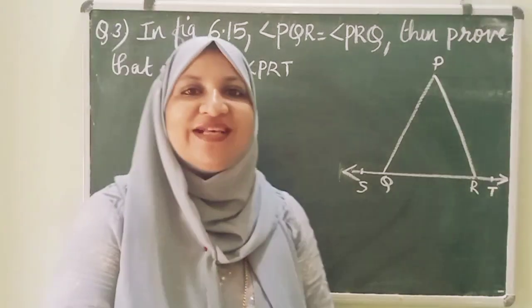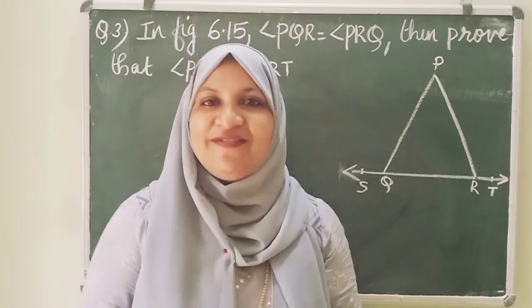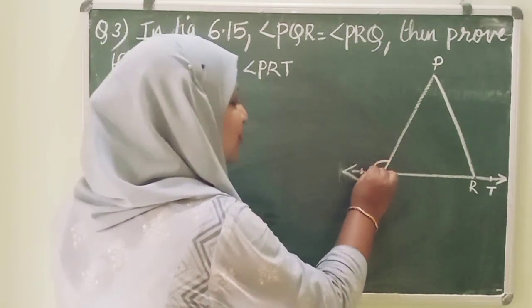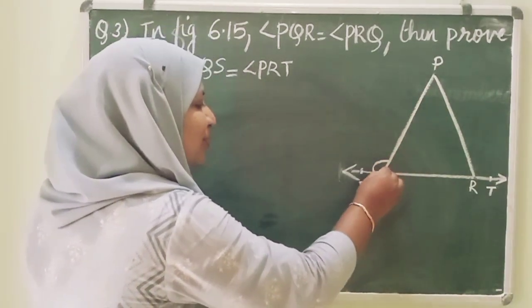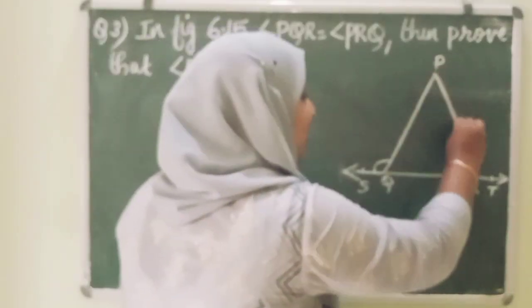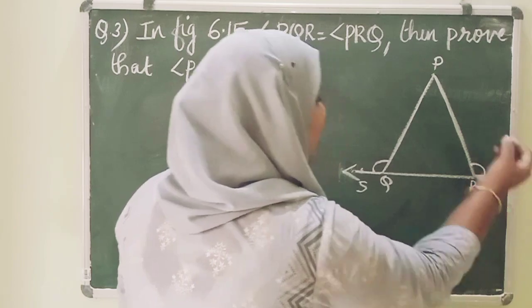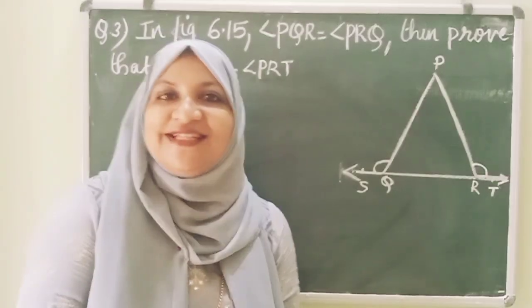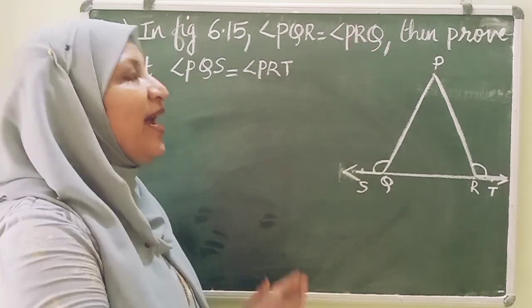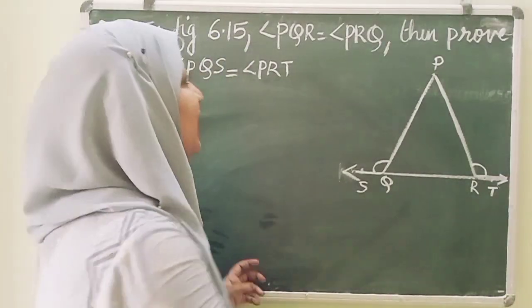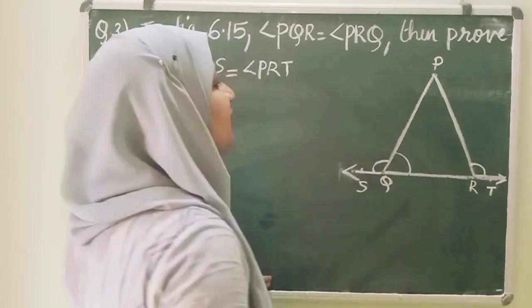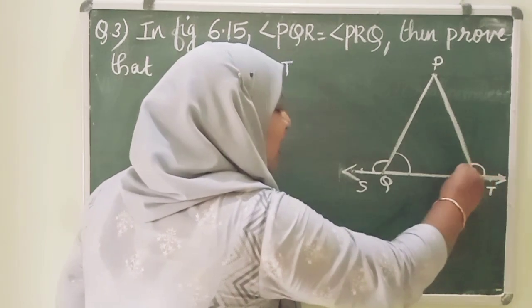We need to prove that angle PQS is equal to angle PRT. Let's look at angle PQS — that is this angle. What angle do we need to prove it equal to? Angle PRT.